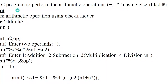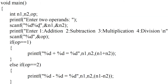Write a C program to perform the arithmetic operations — addition, subtraction, multiplication, and division using LC ladder. First of all, enter two operands.